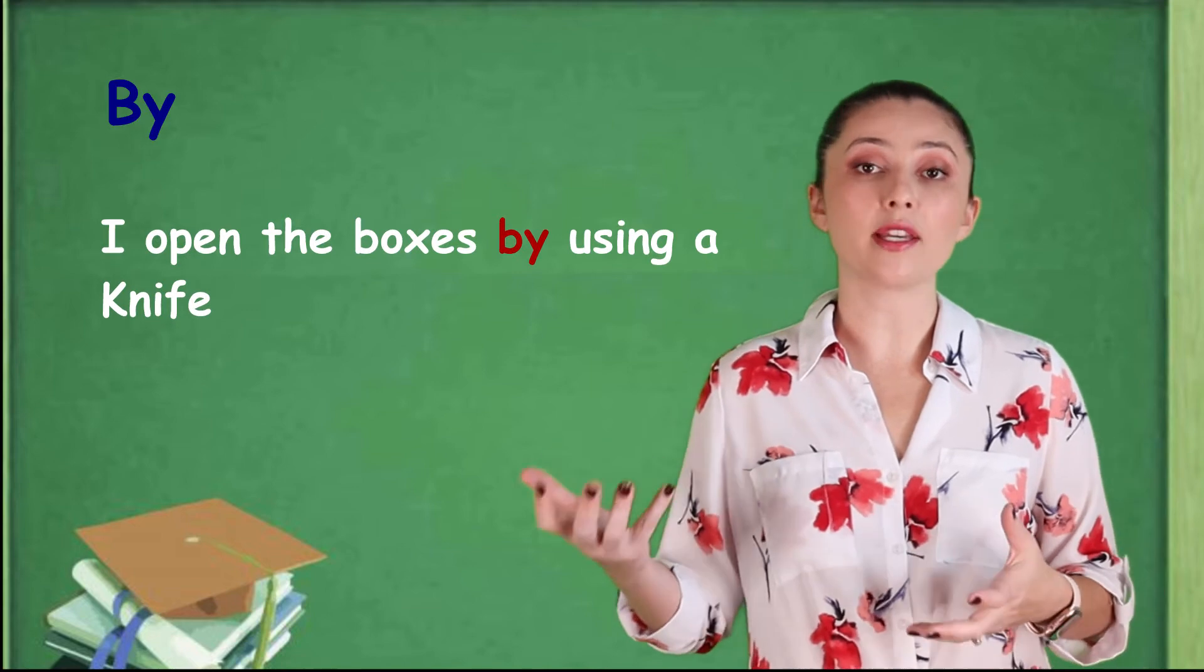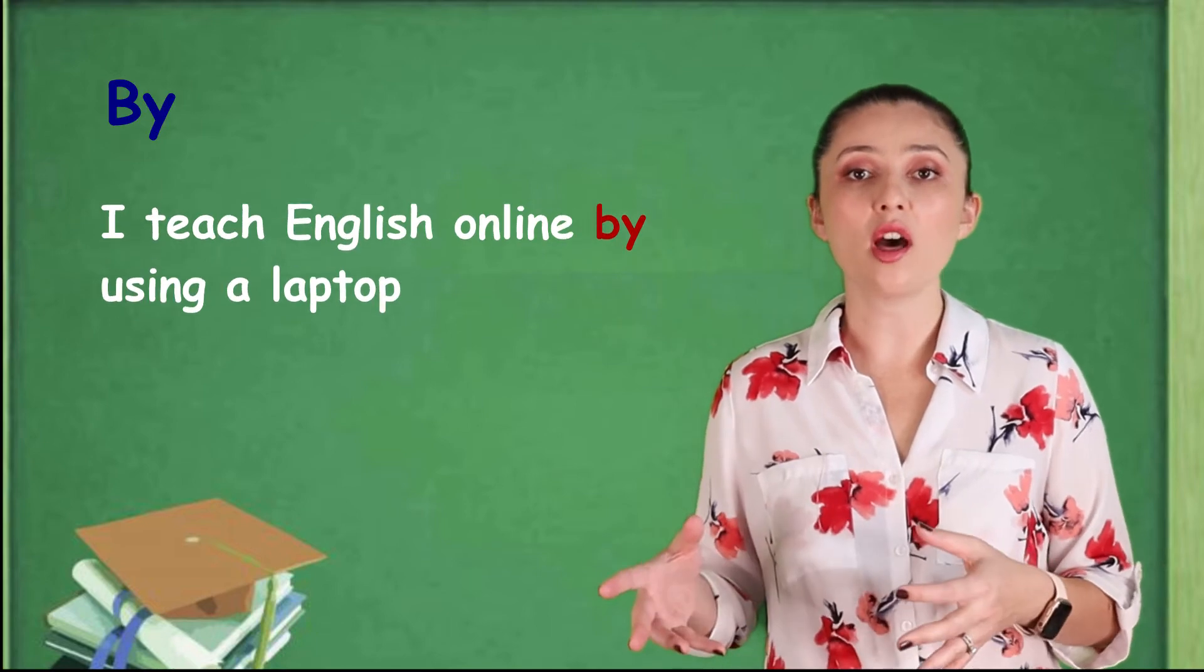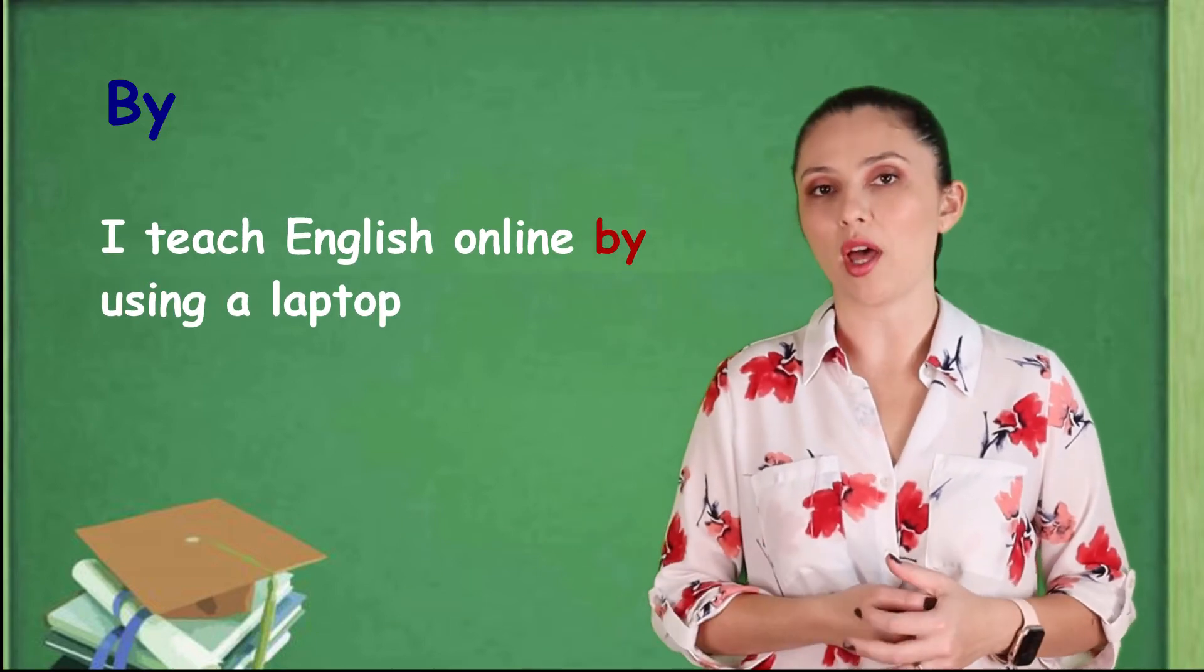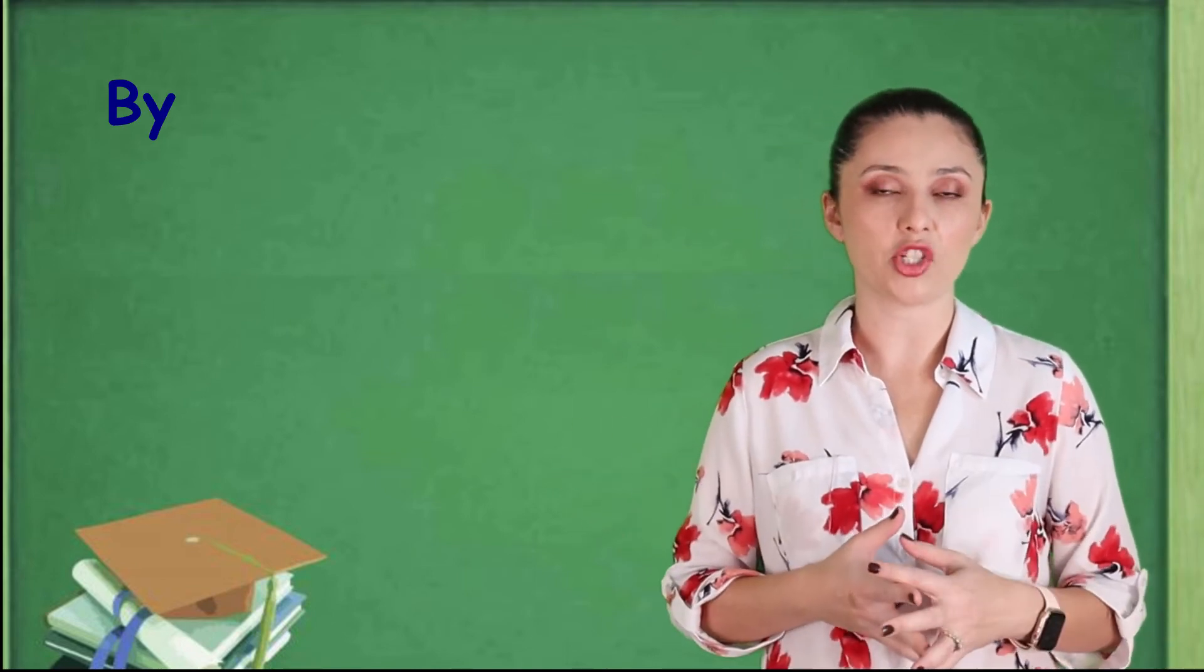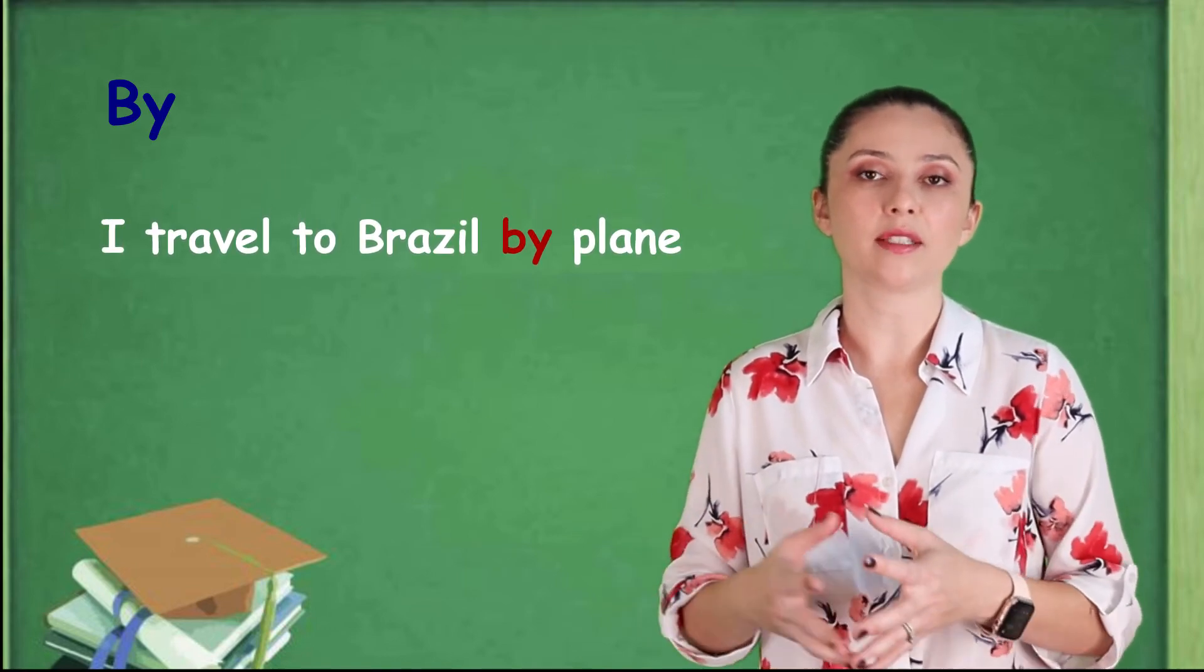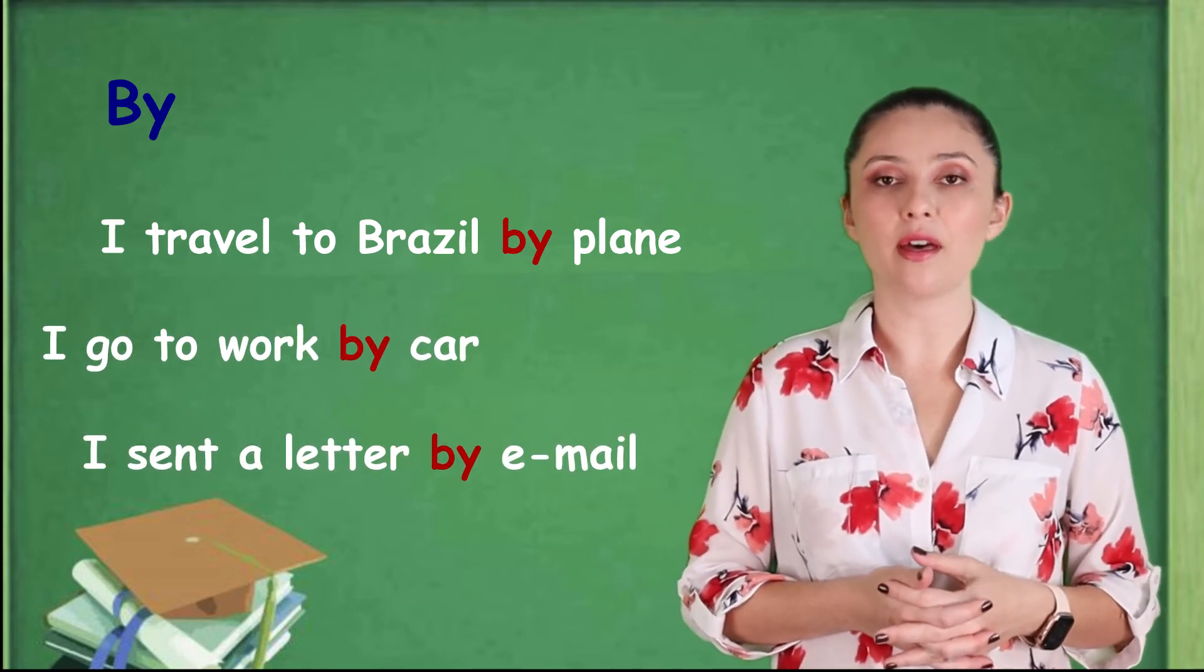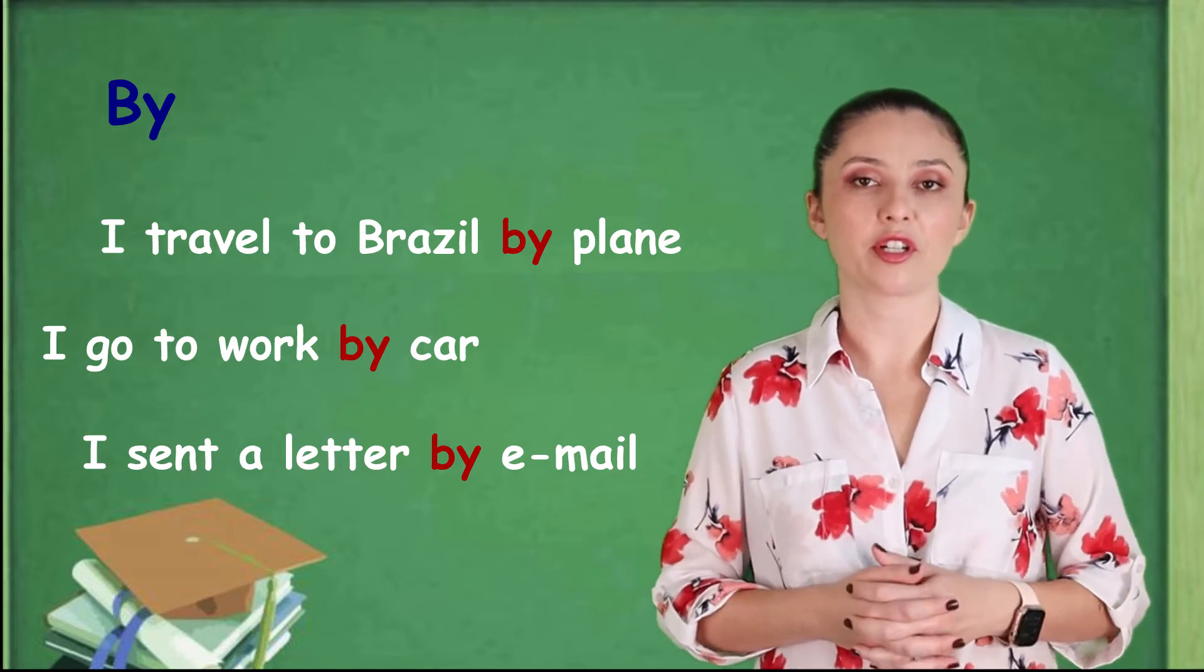Let's move on to the next category. So, you can use the preposition by to tell how to use something. So, I can say, I open the boxes by using a knife. By using a knife. I teach English online by using a laptop. Also, when we are talking about transportation, movement and direction. Also, when we are not using the determiners such as the, a and an. I travel to Brazil by plane. I go to work by car. I sent a letter by email. In here, we don't have the determiners.